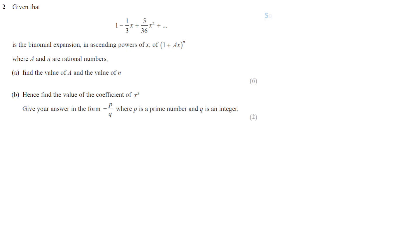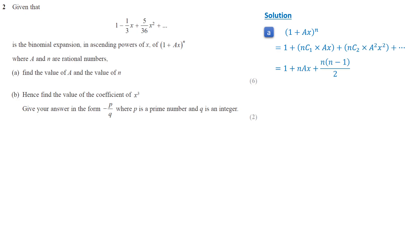In this question, we are expanding (1 + ax)^n. The second term is n·ax, and the third term is n(n−1)/2 times a squared x squared. We compare this with the given expression. The coefficient of x is negative 1 over 3, and the coefficient of x squared is 5 over 36.